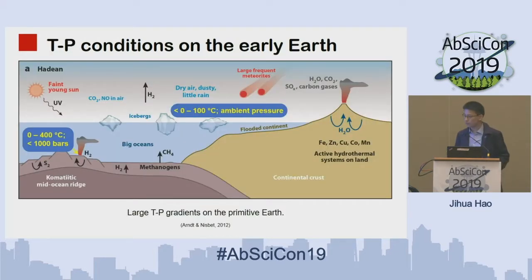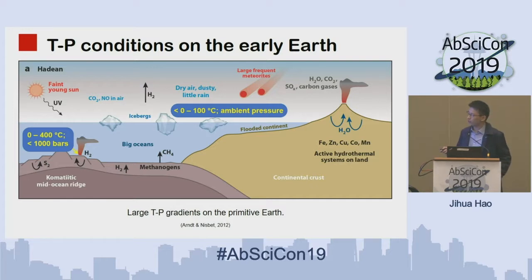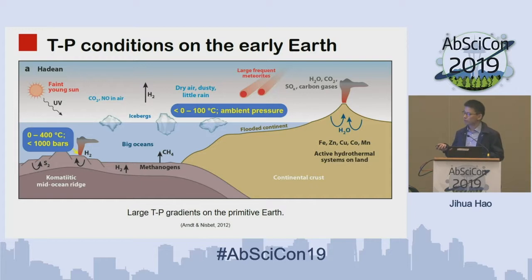That's why I want to focus on this study. Another reason is that temperature and pressure conditions on the early Earth show a large gradient — from hydrothermal fluid which can reach up to 400°C, to surface temperatures which are very controversial, with studies showing either below zero or less than 100°C. There is also a large gradient of pressure from less than 1,000 bars to about one bar. This large gradient shows that complexation under these conditions is critical for the habitability of the early Earth.